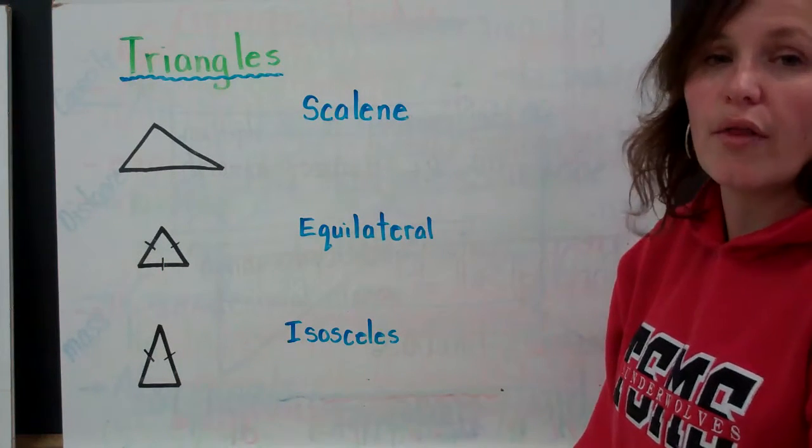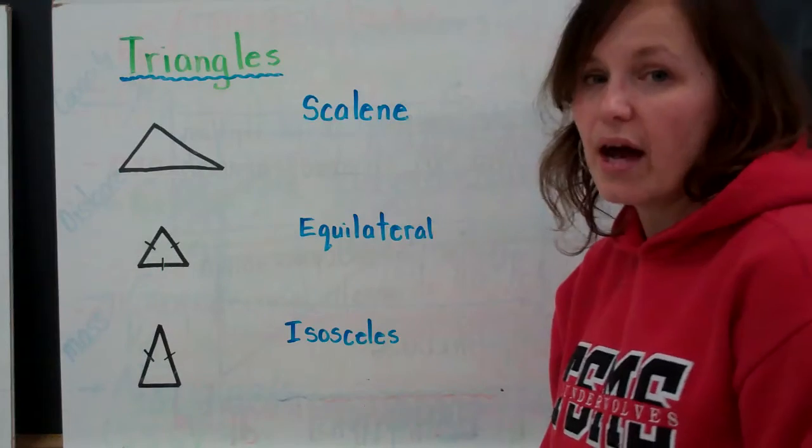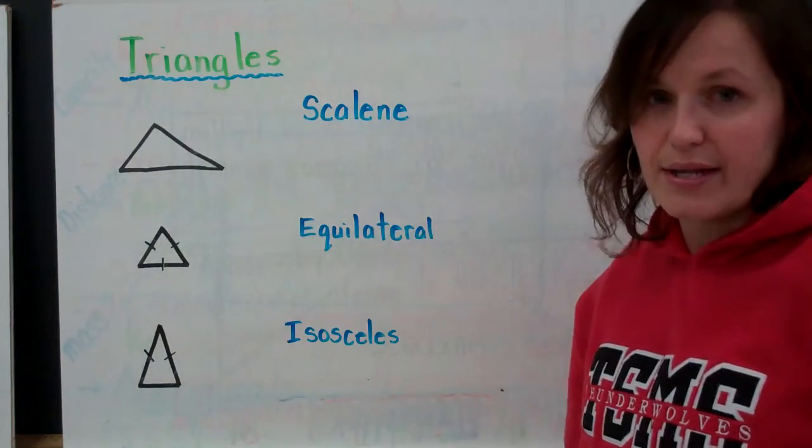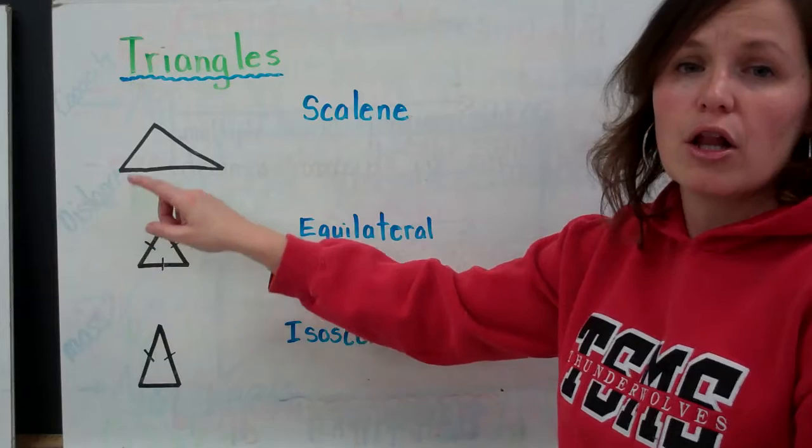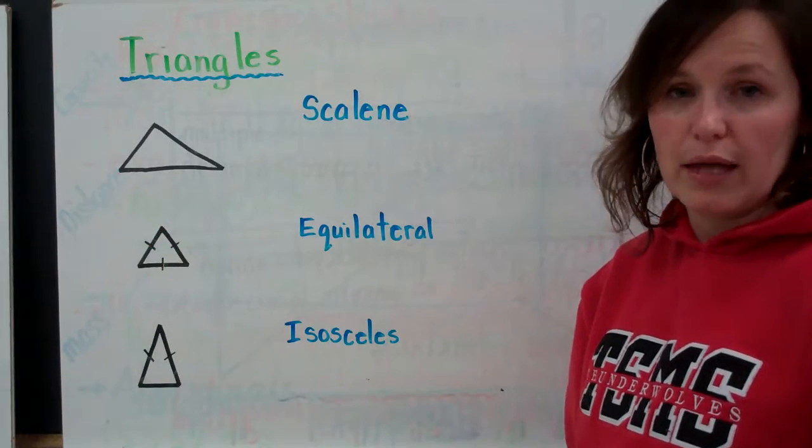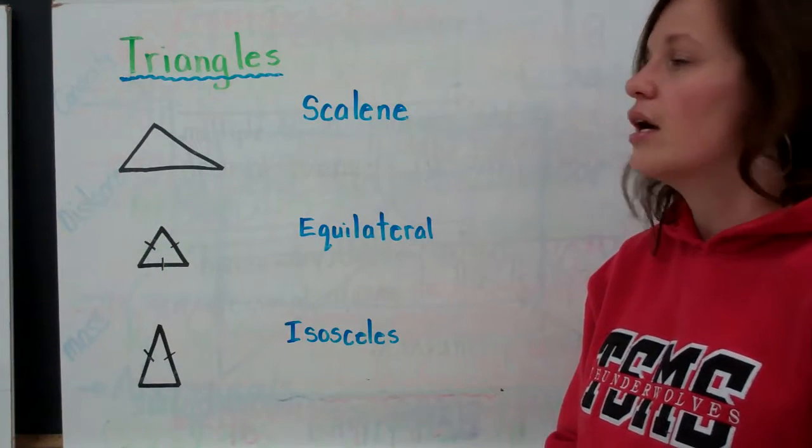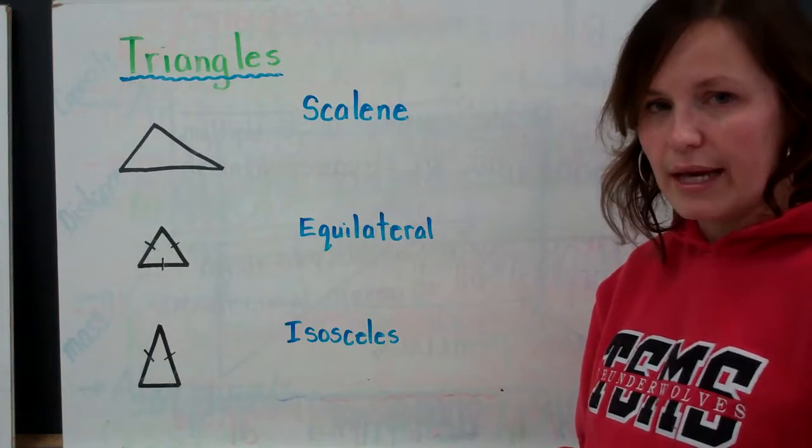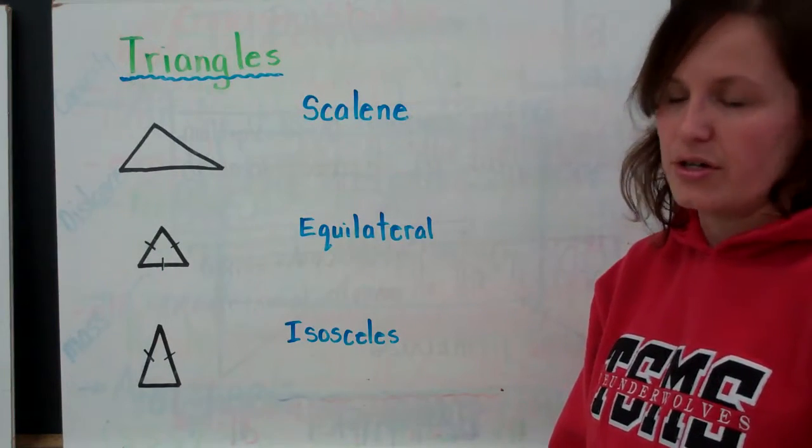Qualities of a triangle. We know that all angles need to add up to 180 degrees, and there are different ways that we can get there. In a scalene triangle, all the sides are different, all the lengths are different, and all the angles are different.